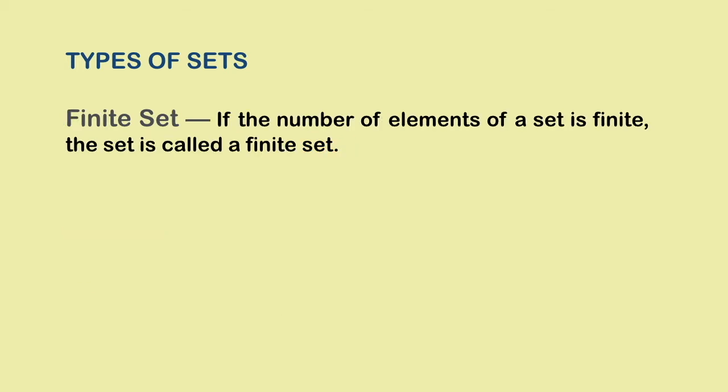A finite set. If the number of elements in a set is limited or finite, the set is a finite set. If you look at the examples, set A has 2 elements and B has 13 elements, natural numbers from 2 to 14, both included. And so both A and B are finite sets.